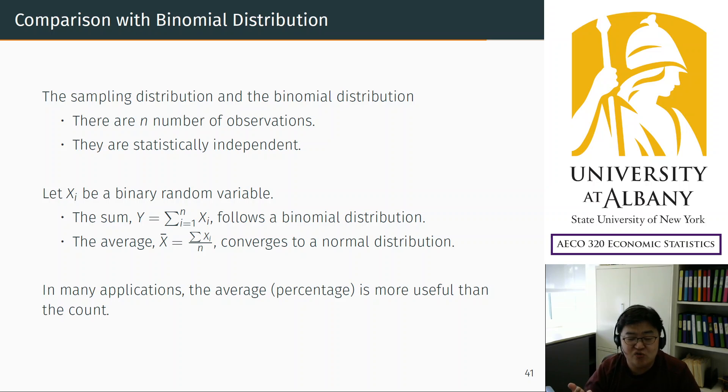But now once you understand the sampling distribution, you don't need to calculate the binomial distribution. You can just approximate. If you could approximate that to normal distribution, everything would be much easier. The calculation should be much easier. So here let me compare how much different they are.